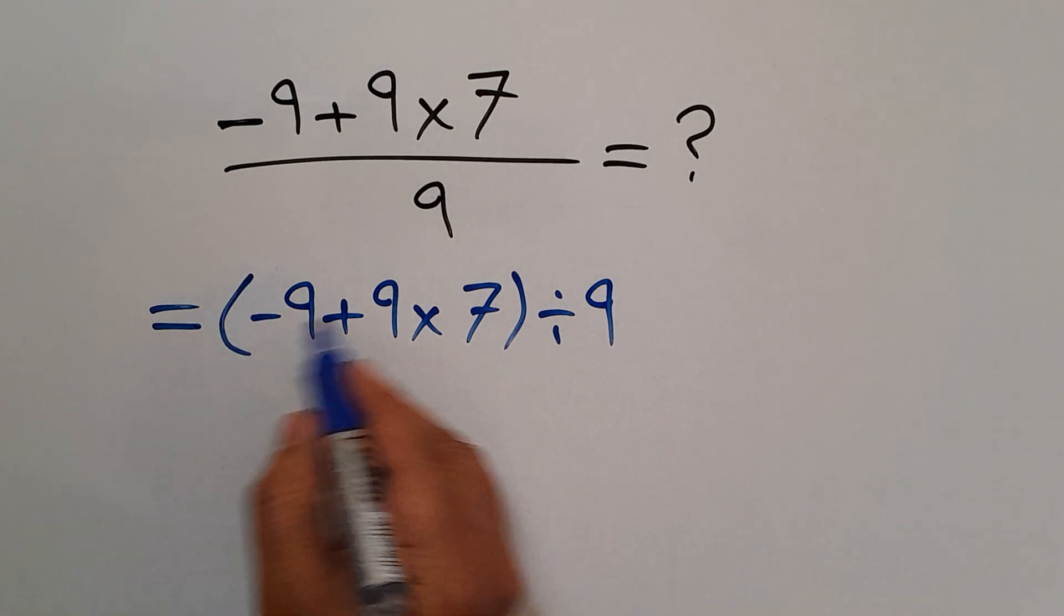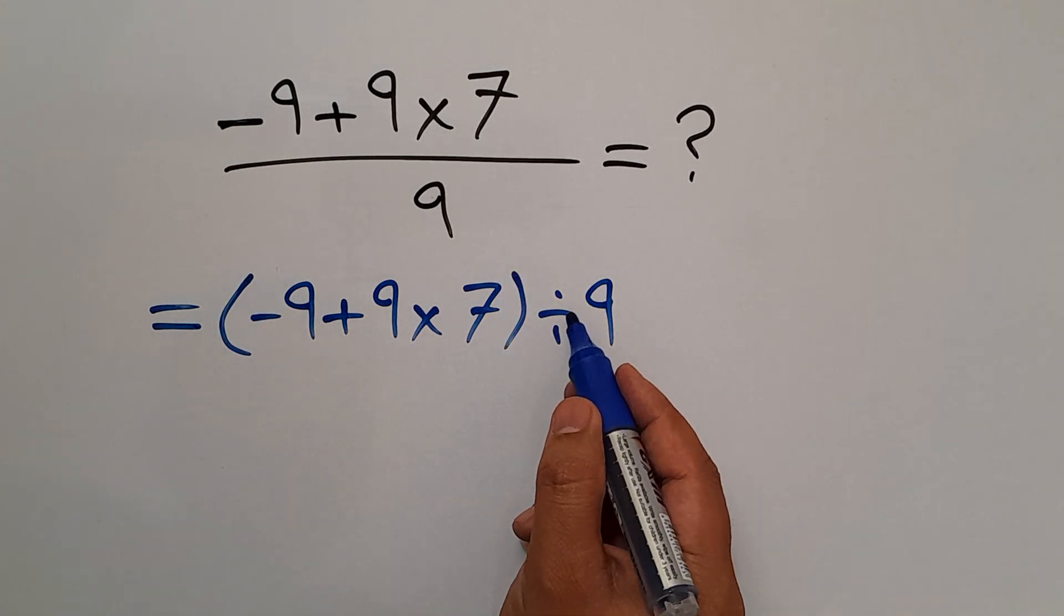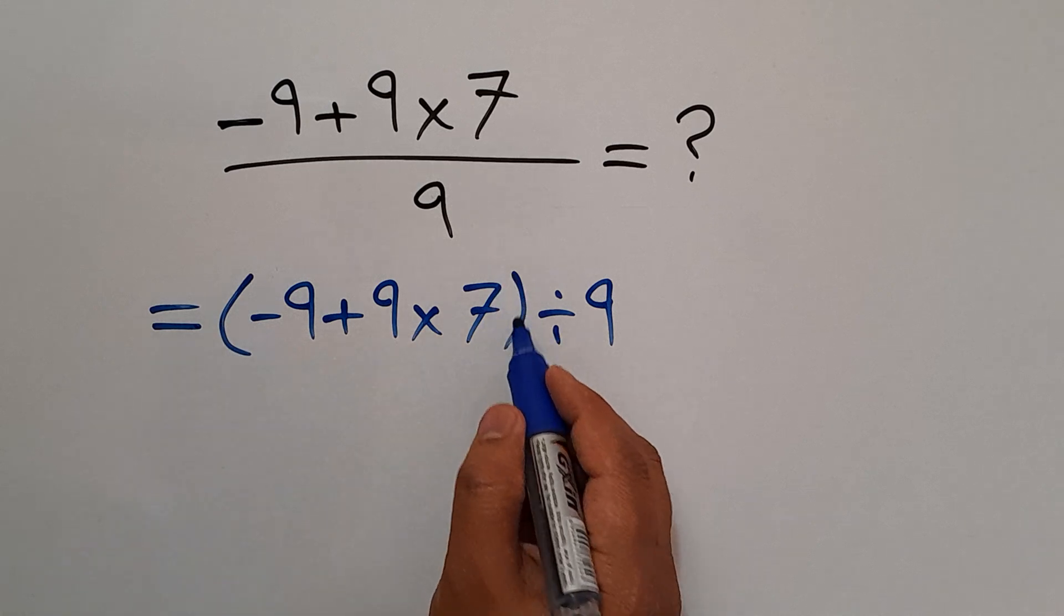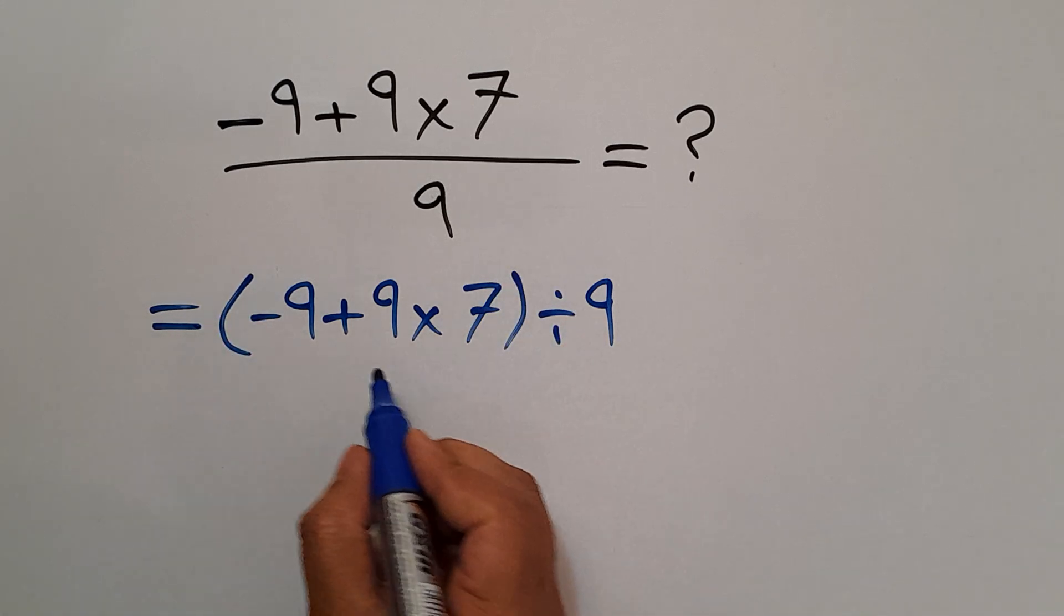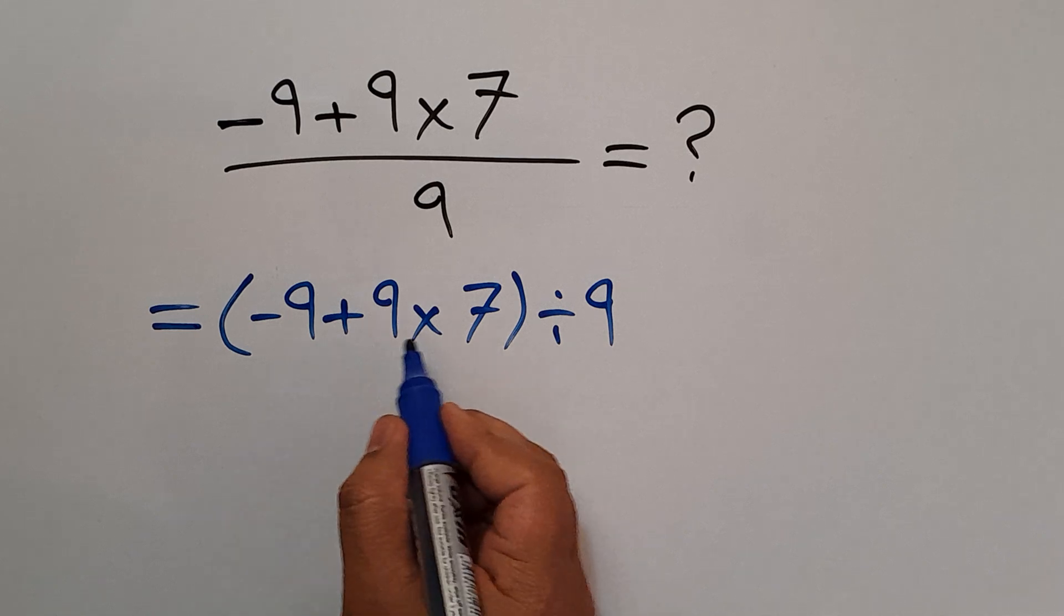And here we have these parentheses and this division. As we know, parentheses has higher priority than other operations. So first we do these parentheses. And inside these parentheses we have this addition and this multiplication.